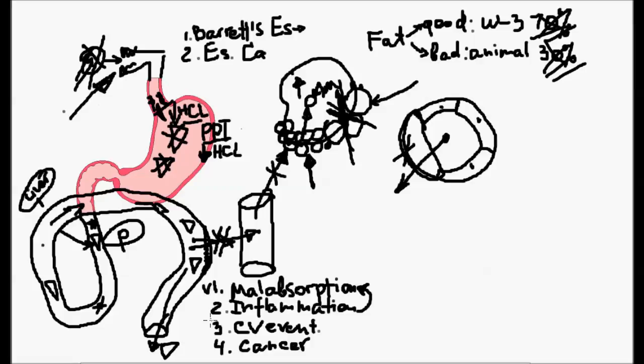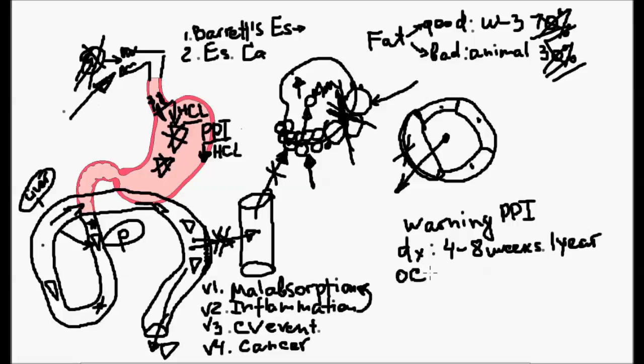Doctors know about all of these possible side effects. So does the FDA. That's why you see warnings on the label of PPIs. The warning states that prescription medications cannot be given more than four to eight weeks. Occasionally, prescription medication could be given for one year. Over-the-counter medication should not be taken more than 14 days, three times per year.